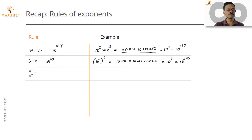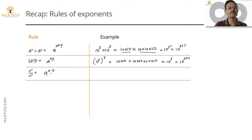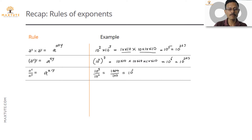The third rule: a^x divided by a^y is equal to a^(x−y) — the difference between the exponents. For example, 10 cube divided by 10 square: 1000 divided by 100 equals 10, which is 10^1, or 10^(3−2). So a^x by a^y equals a^(x−y).